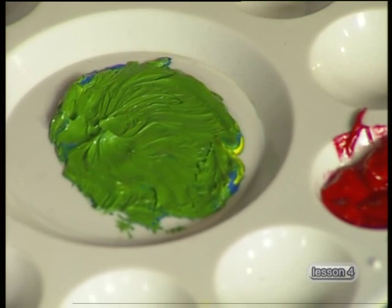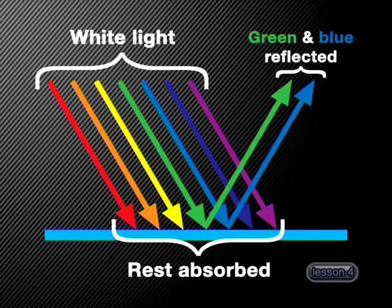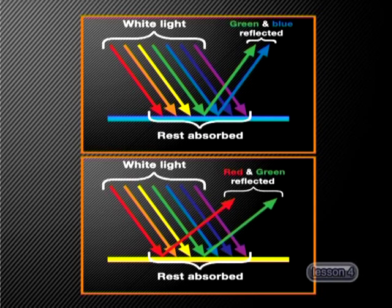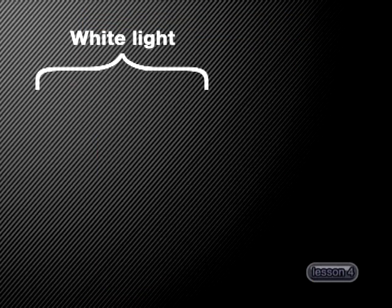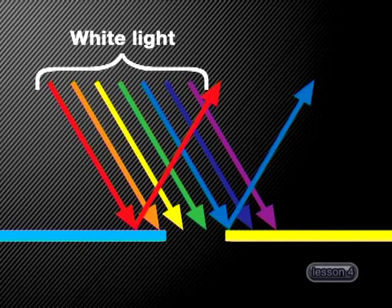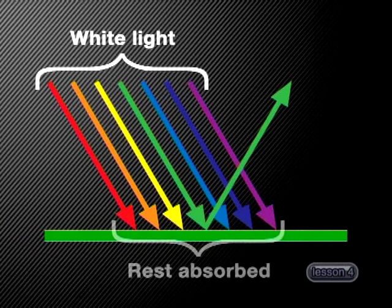Let's explore why these two pigments together produce the colour green. Remember, cyan light is formed by combining green and blue light, so a cyan pigment only reflects green and blue light — all the other colours of light are absorbed by the pigment. Yellow light is formed by combining red and green light, so a yellow pigment only reflects red and green light, and all the other colours are absorbed. By carefully looking at these two diagrams, can you now explain why the combination of cyan and yellow pigments results in the colour green? When we mix cyan and yellow pigments together, the only colour that is not absorbed by this combination is green. We therefore see green because that is the only colour reflected.